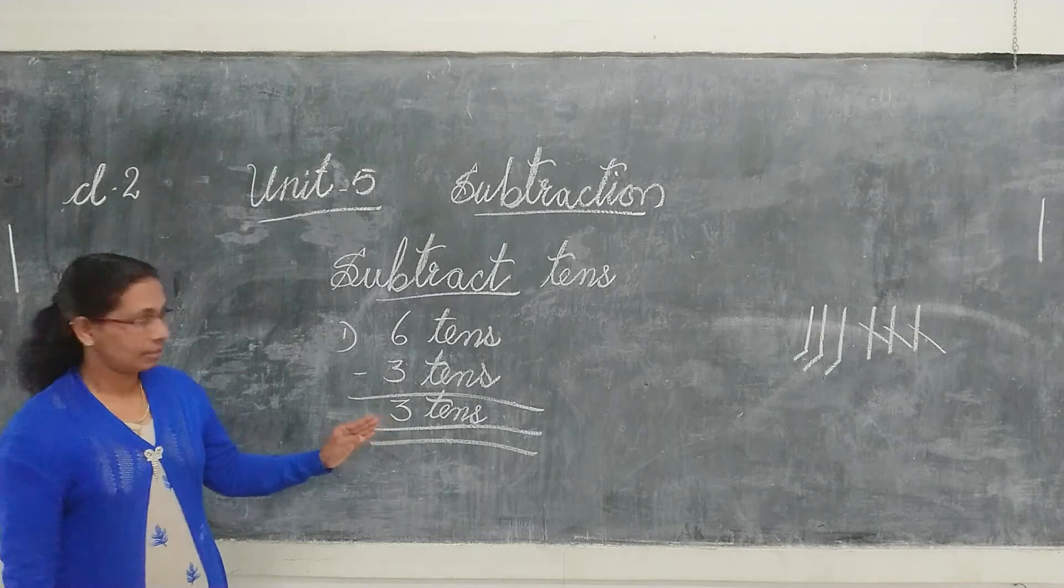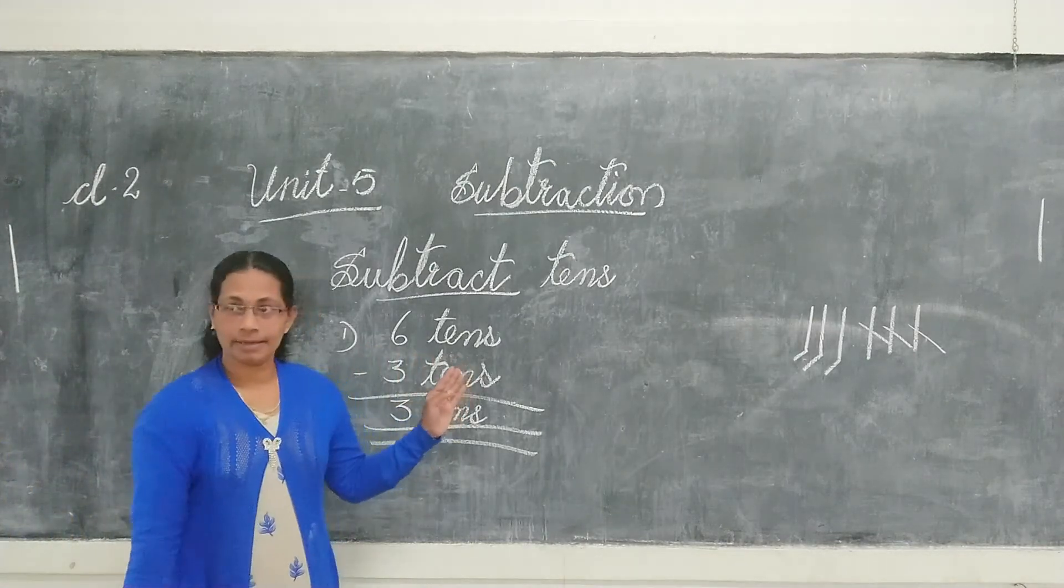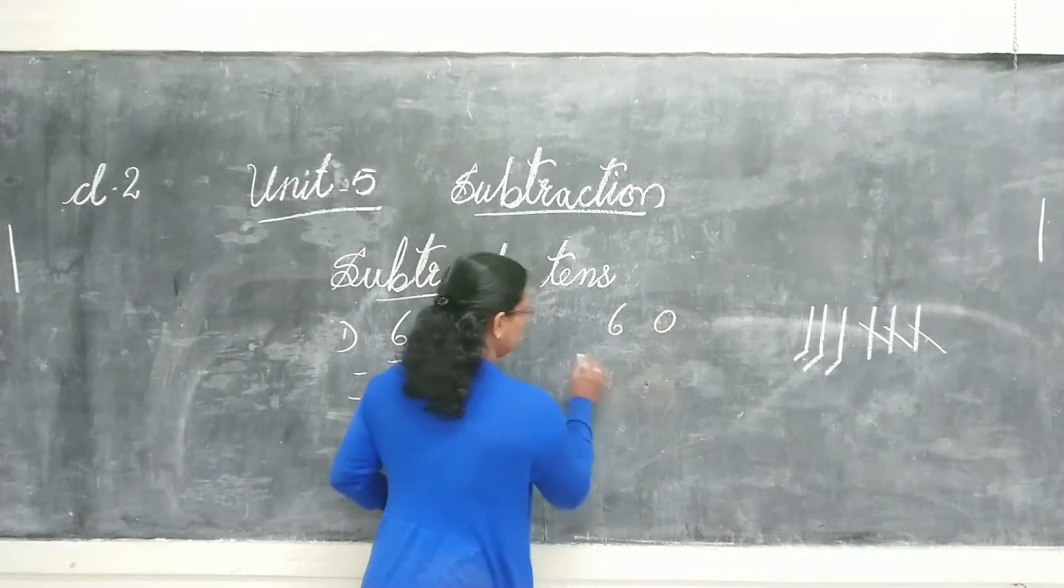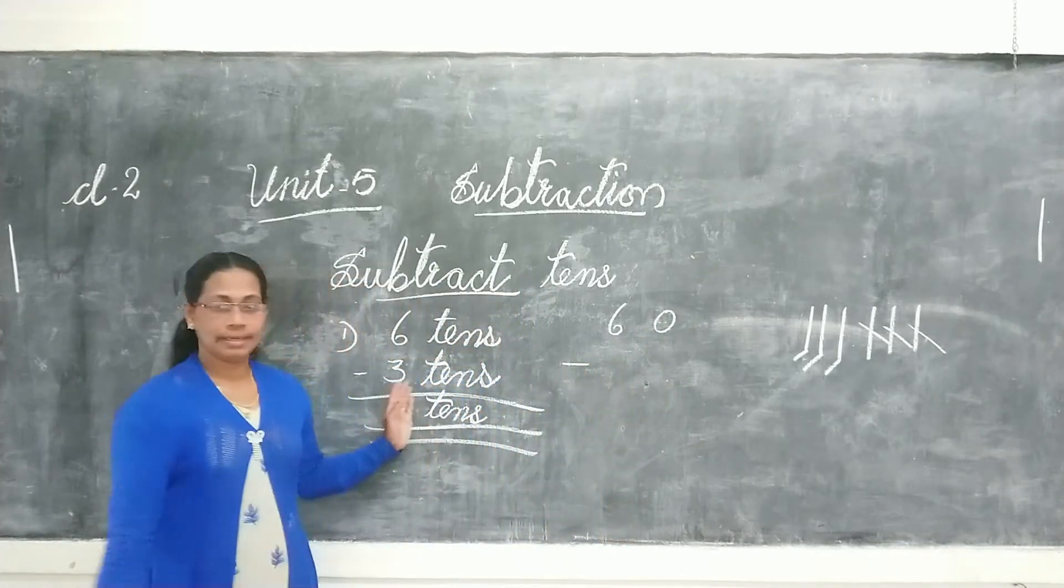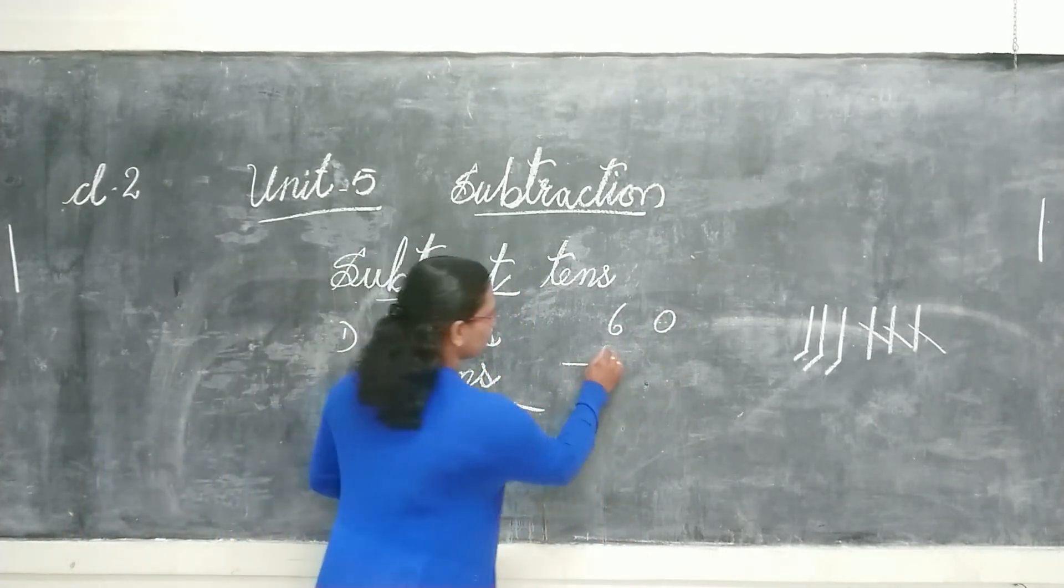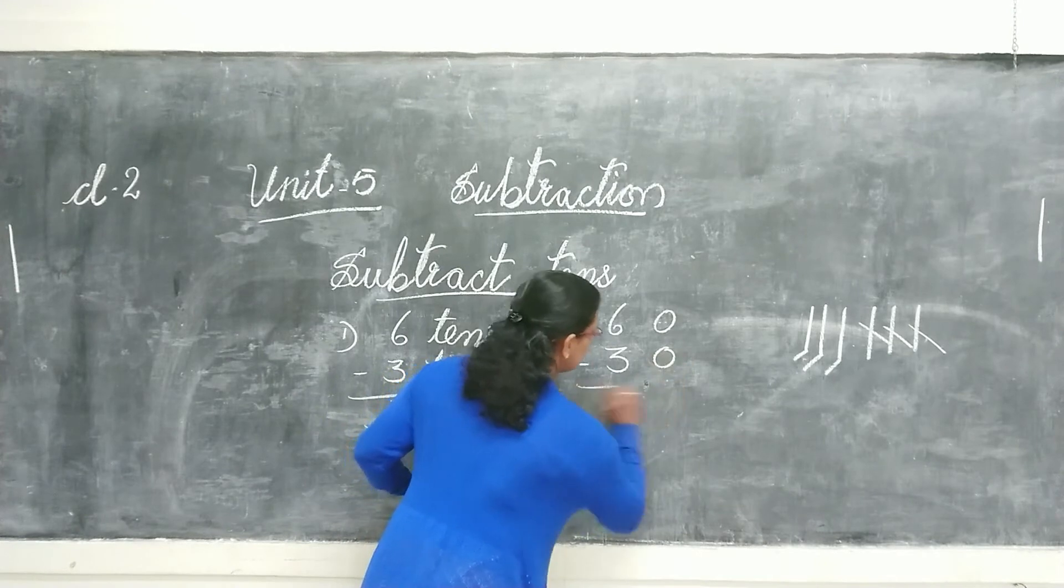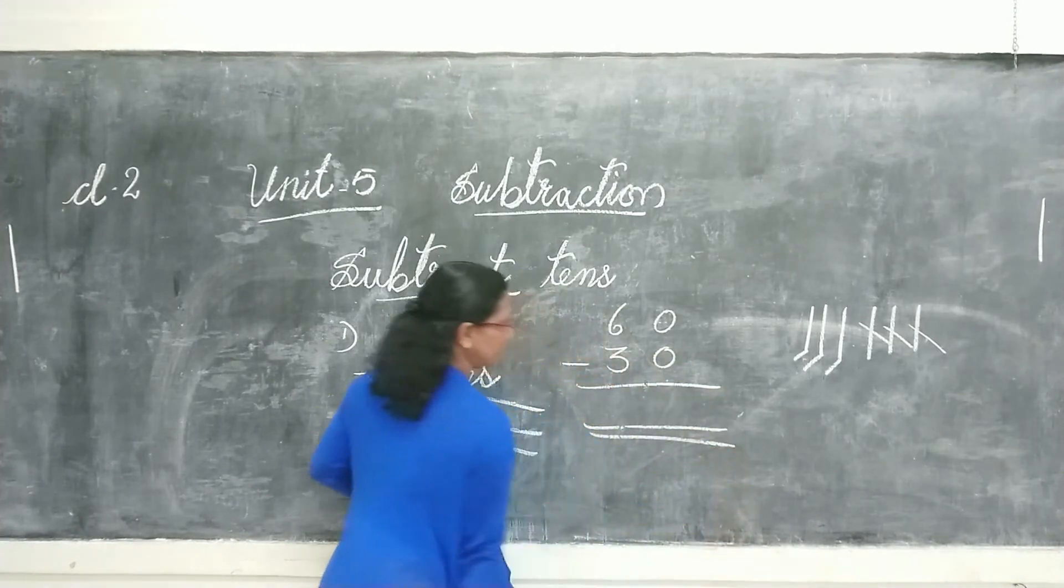We can write in another way: 6 tens are 60, minus 3 tens are 30. So we write here 30.